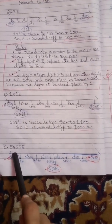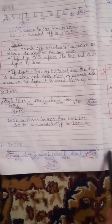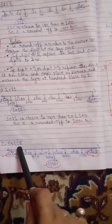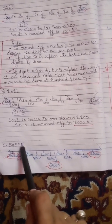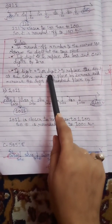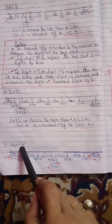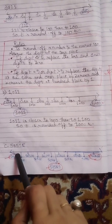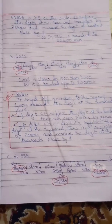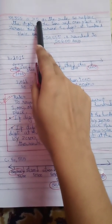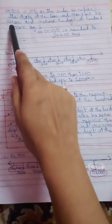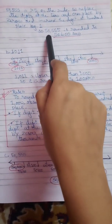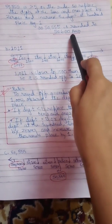Last sum, nearest to 100: 50,555. We make a number line and represent the number. The tens digit is 5, which equals 5. We will apply rule 2: replace the tens and ones digits by 0 and increase the hundreds digit by 1. So 50,555 is rounded off to 50,600. This is the answer.